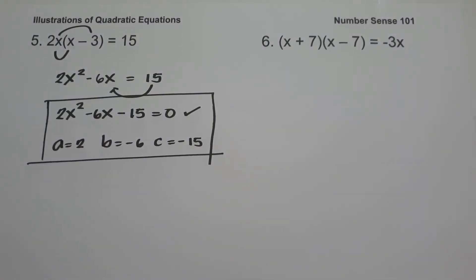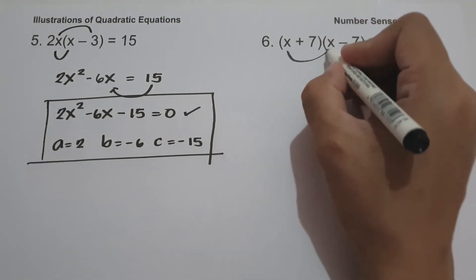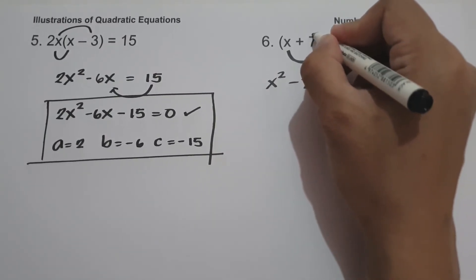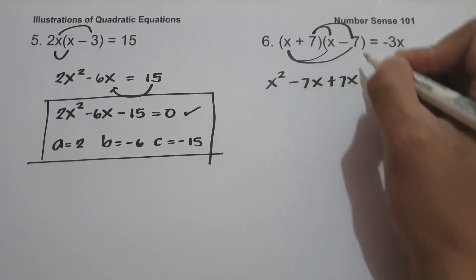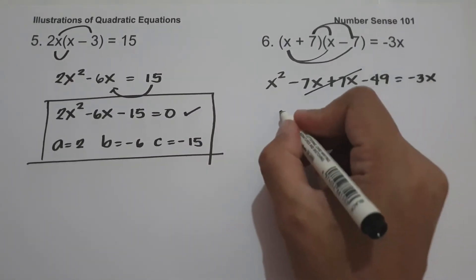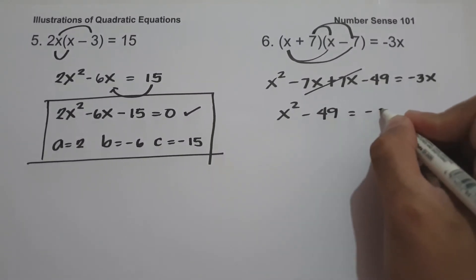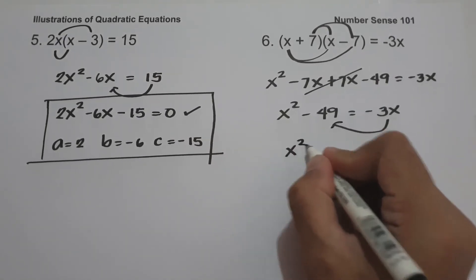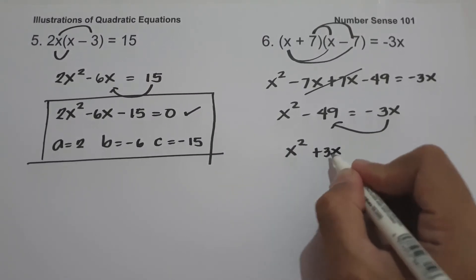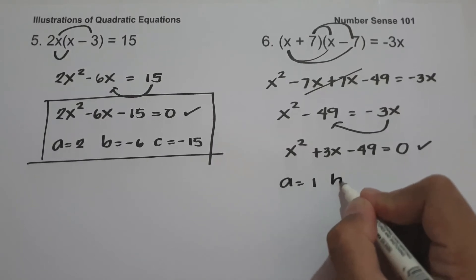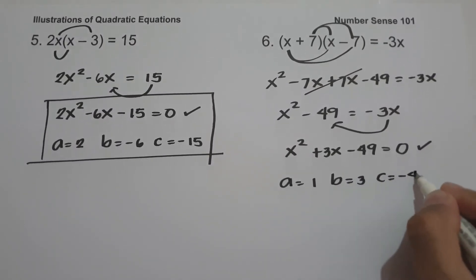On number six, we have (x plus 7)(x minus 7) equals negative 3x. Expanding: x squared minus 7x plus 7x minus 49 equals negative 3x, which simplifies to x squared minus 49 equals negative 3x. Moving negative 3x to the other side: x squared plus 3x minus 49 equals zero. So a is 1, b is 3, and c is negative 49.